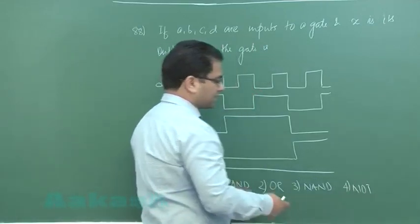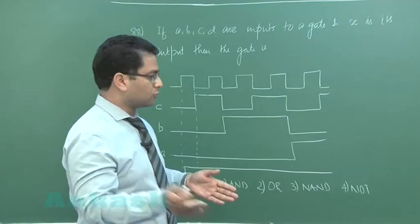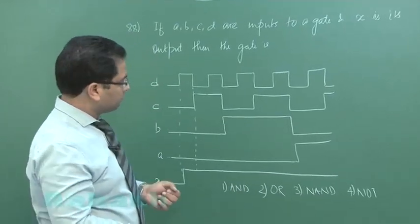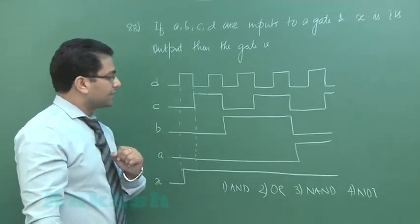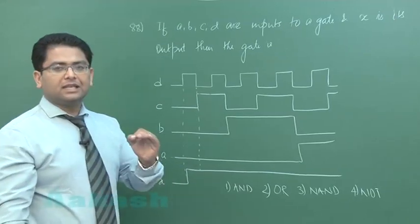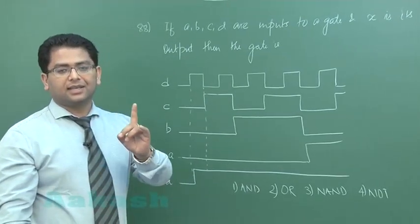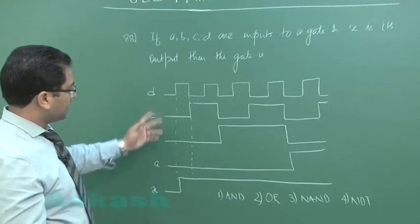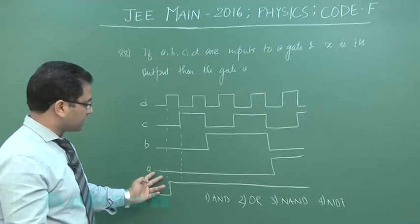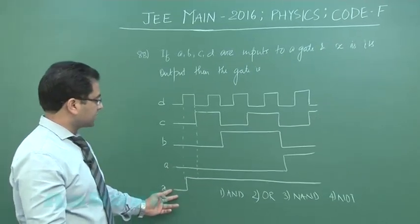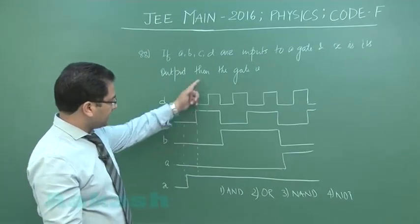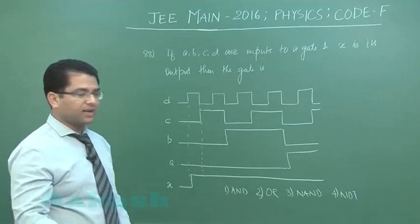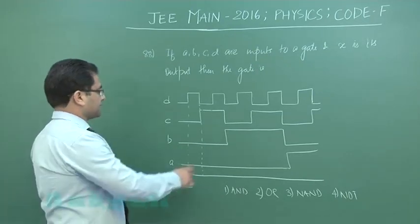For NOT, that simple function has one input and one output, so that's not valid. It must be OR. The reason is for OR, if any of the inputs is high, the total output would be high. And here that's what's happening. In the first case, all inputs were zero, so the output was zero.